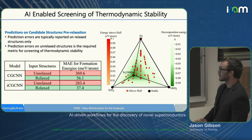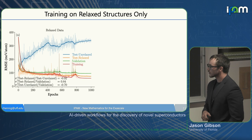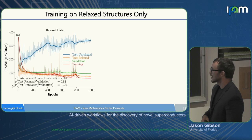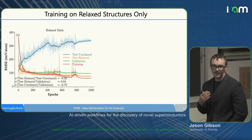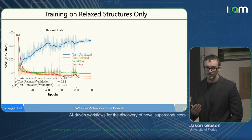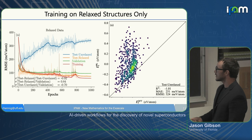We wanted to understand why these models perform well on relaxed structures but poorly on unrelaxed ones. We trained the crystal graph convolutional neural network and observed a strong anti-correlation: as the model got better at predicting formation energy of relaxed structures, it got much worse at predicting formation energy of unrelaxed structures. We found a systematic over-prediction for unrelaxed structures — predicting the formation energy of an unrelaxed structure is a qualitatively different task.